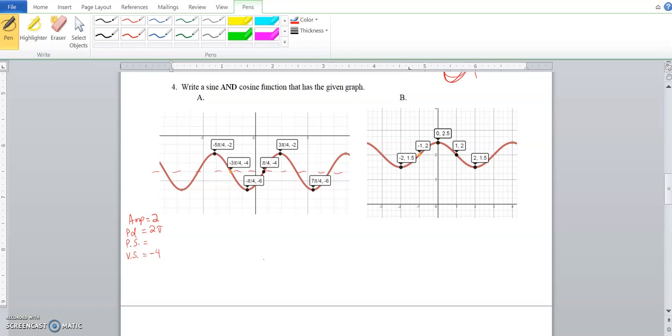Our phase shift depends on the function. For sine, the parent function should start at the midpoint, but that midpoint has been shifted over to pi over 4, so our phase shift for sine is pi over 4. Note that for cosine, cosine starts at a peak. Our peak is at 3 pi over 4 as opposed to having the peak right at the y-axis.